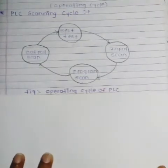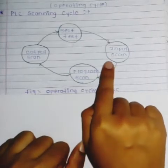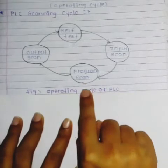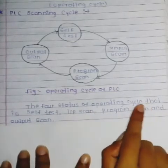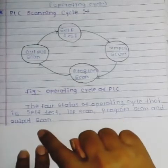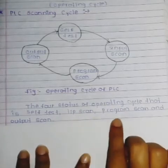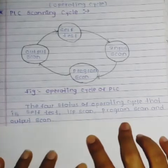Hello students, today we see the next topic: the operating cycle in PLC, also known as the PLC scanning cycle. This is the diagram for the operating cycle of PLC. It consists of four stages: self-test, input scan, program scan, and output scan. These four statuses of the operating cycle will be explained one by one in detail.